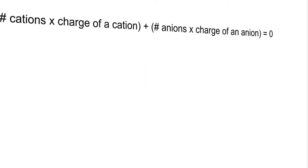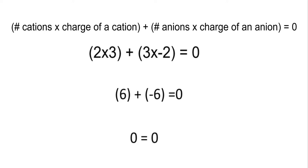We can check our work by using the formula mentioned earlier in this video. Two aluminum atoms at a +3 charge plus 3 oxygen atoms at a -2 charge equals 0. Two times positive 3 equals positive 6 and 3 times negative 2 equals negative 6. Positive 6 plus a negative 6 equals 0. Yay!